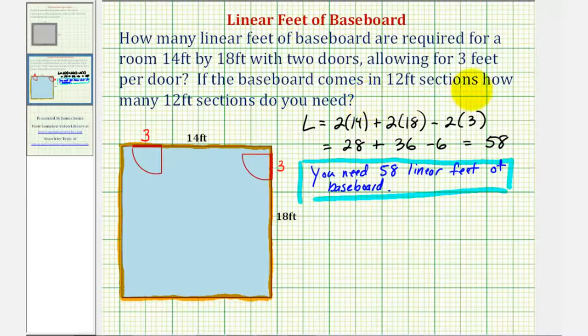If the baseboard only comes in 12-foot sections, we want to know how many 12-foot sections you need. So if you need 58 linear feet and they're only sold in 12-foot sections, we want to know how many 12-foot sections there are in 58 feet, which is a division problem. We'll take 58 feet and divide by 12 feet.